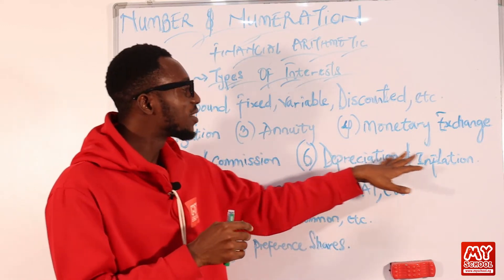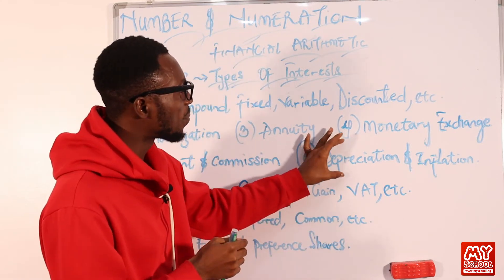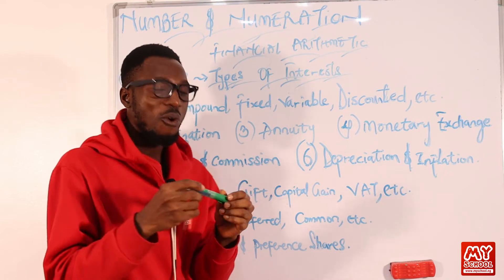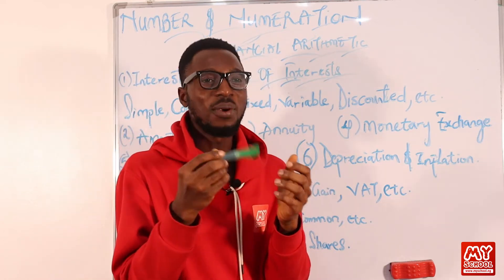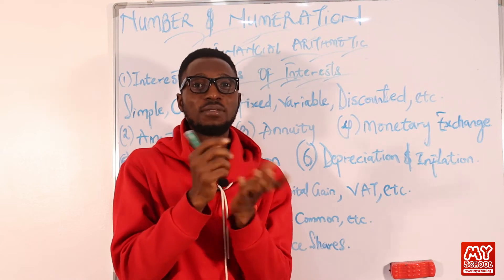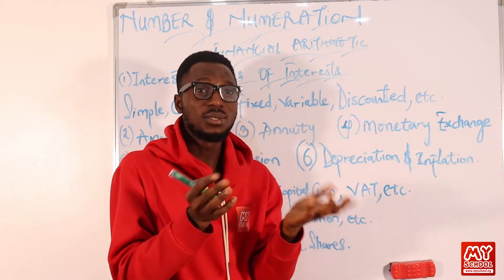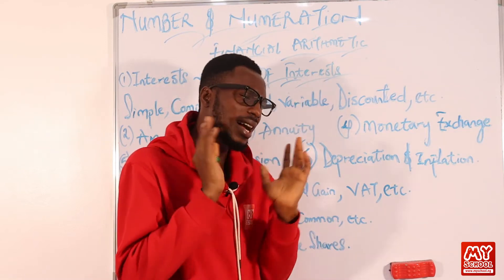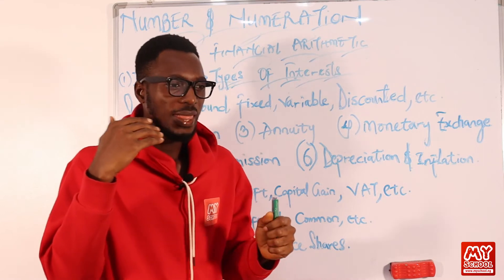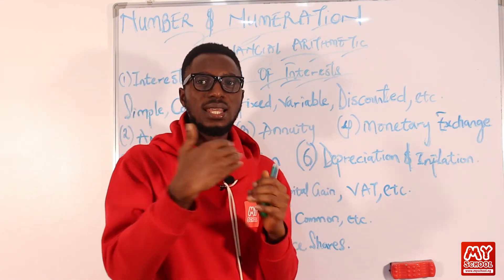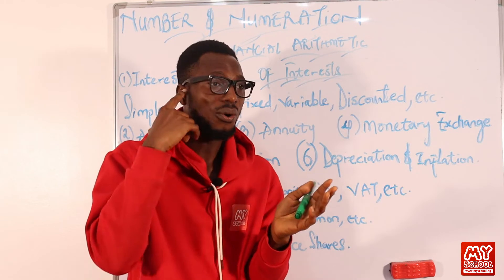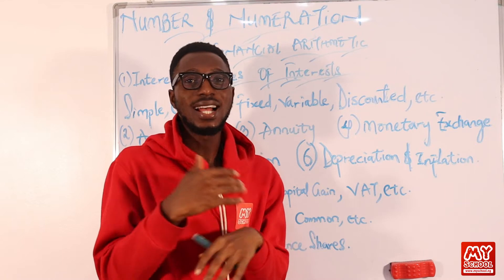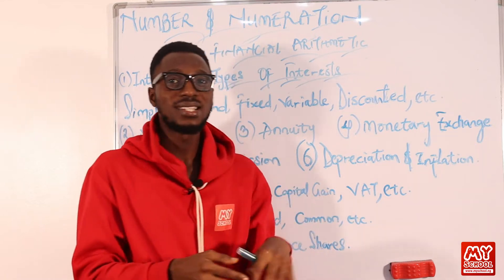We have depreciation and inflation. Depreciation means that over time, a particular asset loses its value. For instance, think of iPhones, wristwatches — though some wristwatches increase in value over time. But consider cars: the longer you use a car, the value, the beauty, or the shine begins to wear off. So as an item or asset loses value over time, that's depreciation.